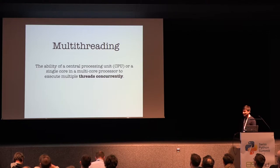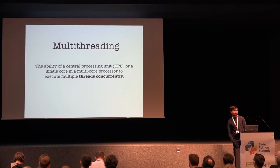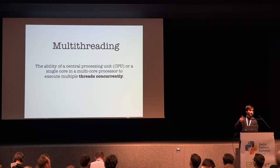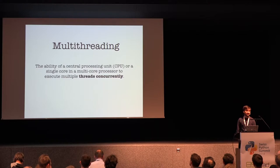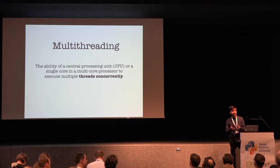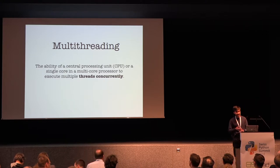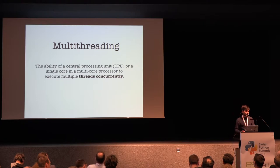Multi-threading is basically the ability of a central processing unit to run multiple threads concurrently. There's a lot of misconception between concurrency and parallelism, so I'd like to clear that first. Concurrency is more like cooperative multi-threading — a thread is running, it will wait and another thread will run. Parallelism means two threads running at exactly the same time — two or more, depending on how many threads you spawn.